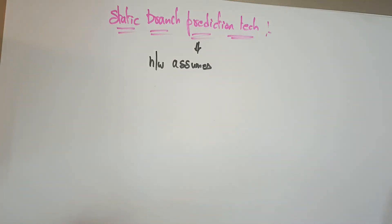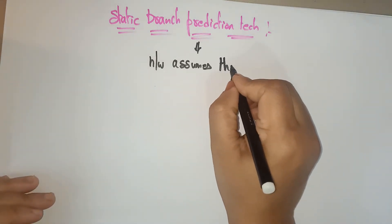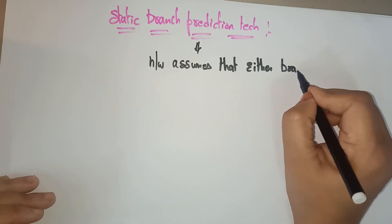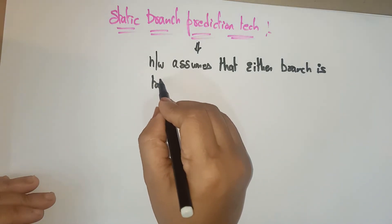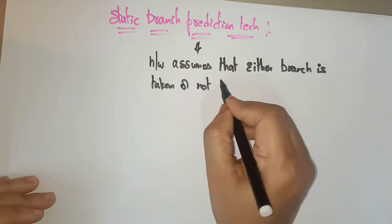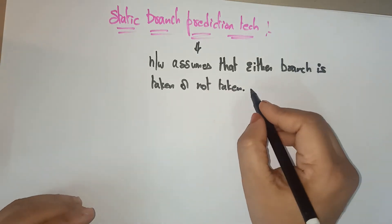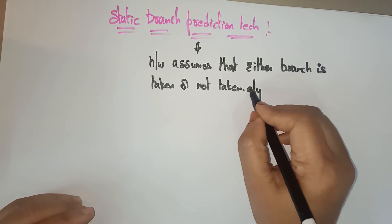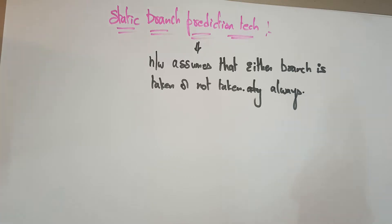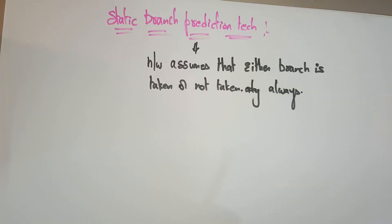In this technique, the underlying hardware assumes that either the branch is taken or not taken — always. So always, either the branch has to be taken or the branch has not to be taken. This is what static branch prediction means, and I am talking about branch taken and branch not taken.